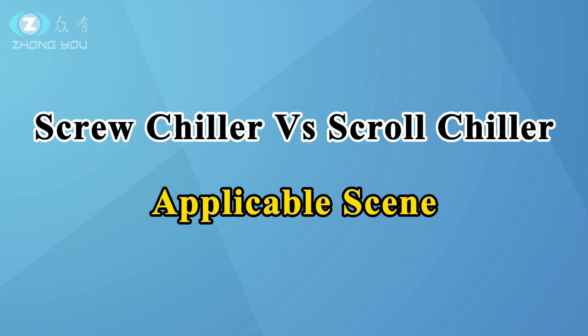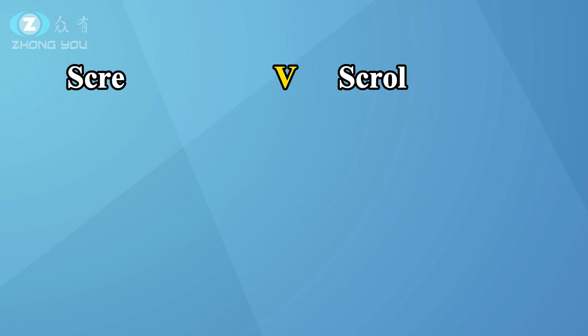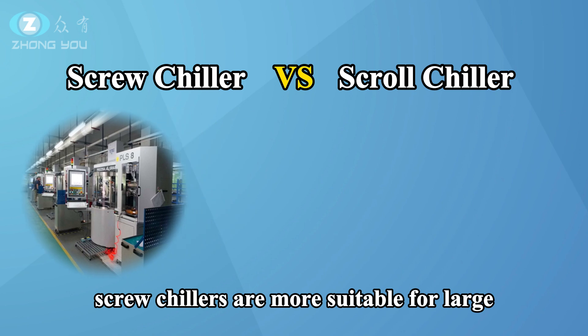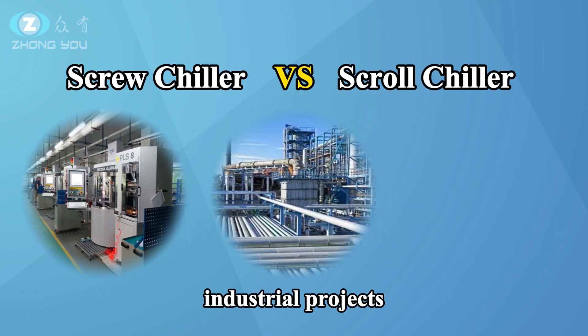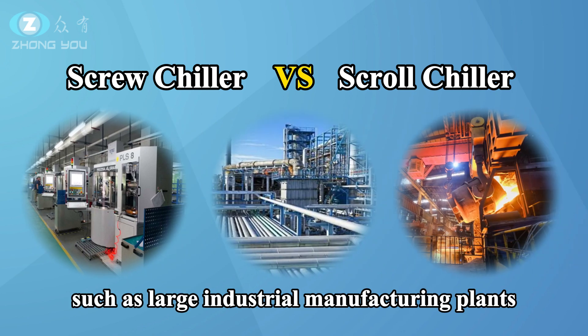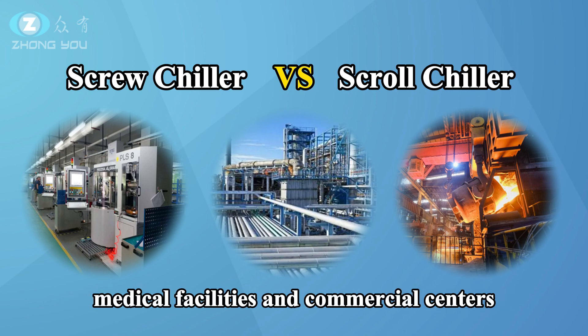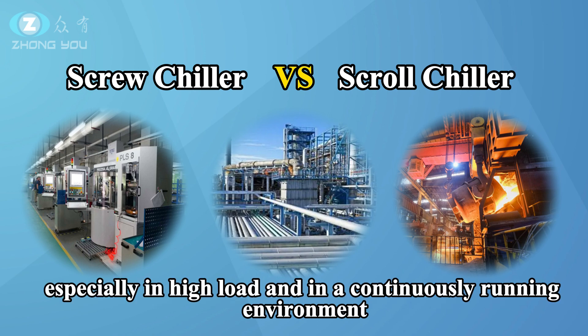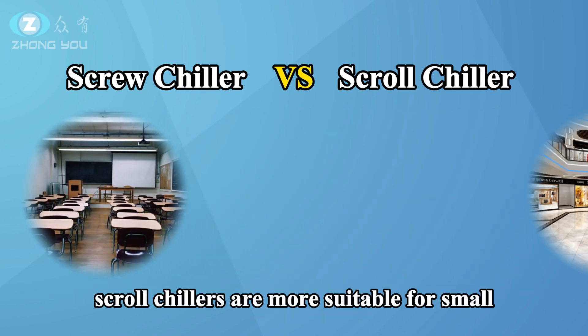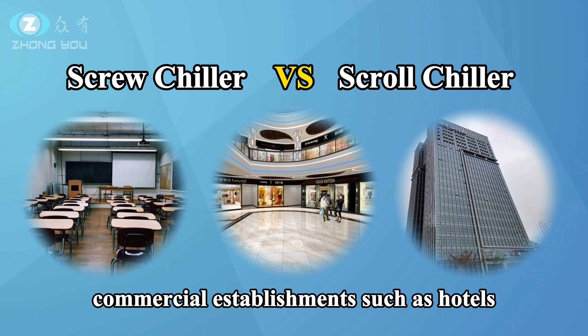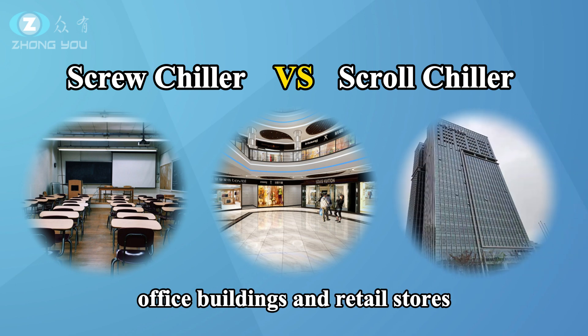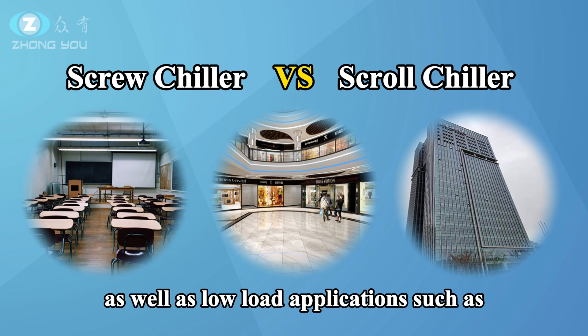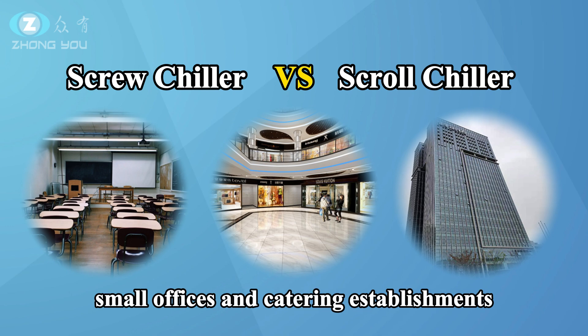Screw chiller vs. Scroll chiller — Applicable Scene. Screw chillers are more suitable for large industrial projects, such as large industrial manufacturing plants, medical facilities, and commercial centers, especially in high load and continuously running environments. Scroll chillers are more suitable for small commercial establishments such as hotels, office buildings, and retail stores, as well as low load applications such as small offices and catering establishments.